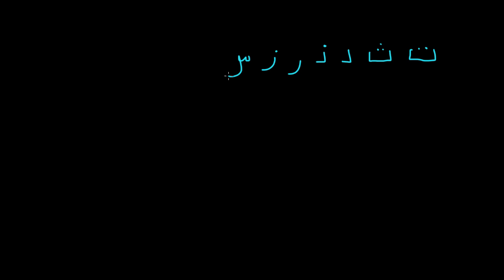All the sun letters are: Ta, Tha, Dal, Dhal, Ra, Zey, Sin, Sheen, Sod, Dod — and there are more. If any of these comes after an 'Al,' you don't pronounce the Lam and you put a Shadda on that letter instead.